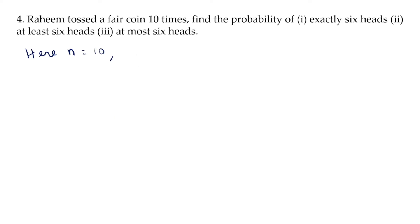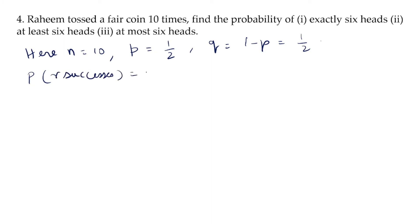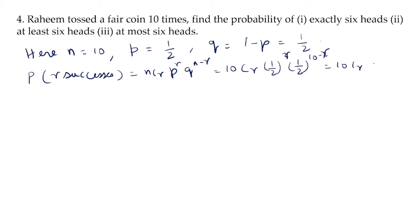If we consider the probability of success as getting a head, then p = 1/2 and q = 1 − p = 1/2. The general formula for probability of r successes is nCr · p^r · q^(n−r). Here n = 10, p = 1/2, q = 1/2, so it becomes 10Cr · (1/2)^10.